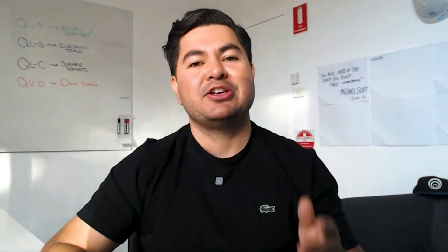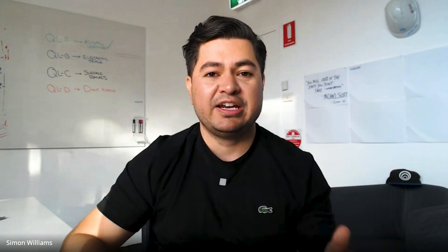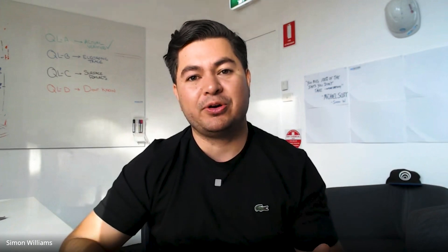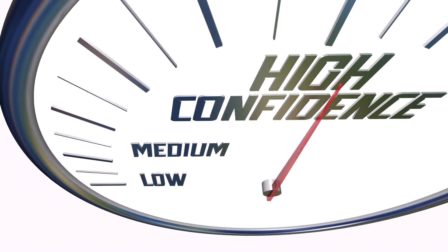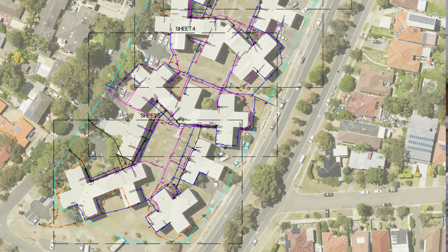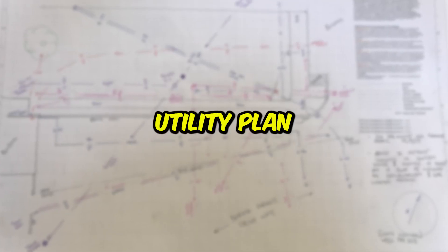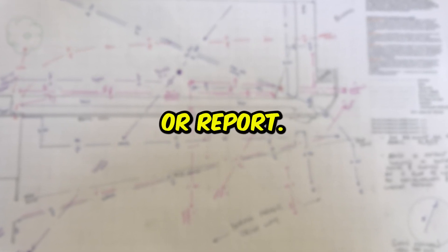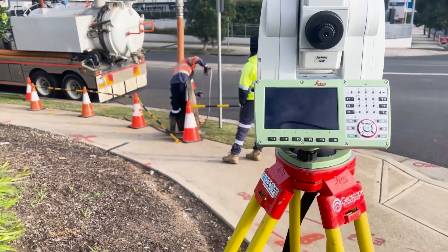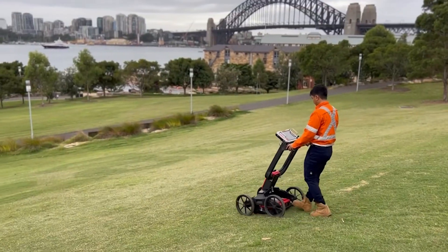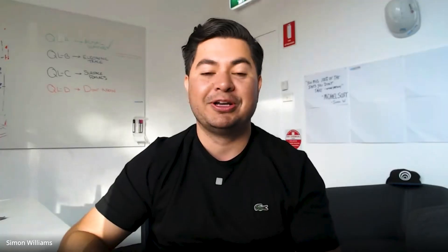What is a quality level A subsurface utility information survey to the Australian standard AS5488? In a nutshell, the quality levels on Australian standard AS5488 outline the reader's and user's confidence level when interpreting the subsurface utility information on a given utility plan, map or report. When it comes to planning and working around utilities, having confidence in the utility information makes all the difference — whether you make it or break it, quite literally.